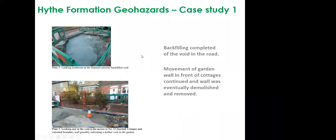The foam concrete backfill in the road voids was completed, but then further voids started to creep forward between the filled area in the highway and the garden and front door areas of the cottages — the path had dropped and a wall was starting to collapse. In the end the wall had to be demolished and removed for safety reasons, and more foam concrete was placed into those voids to make the area safer.